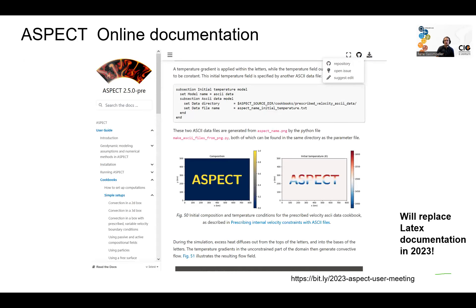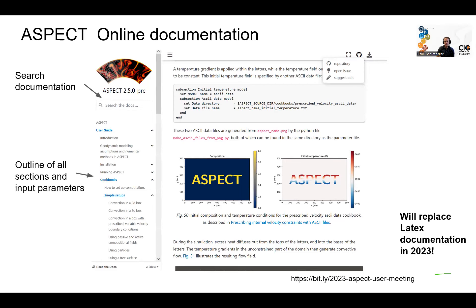Looking at how the documentation looks on the website: the main features we think are improvements over the traditional PDF manual are — there's a search box where you can search for any keyword and find the pages in the documentation that mention it. There's also a table of contents on the left, similar to many PDF readers, but it combines the documentation pages and all of the input parameters for Aspect's input files in one place.